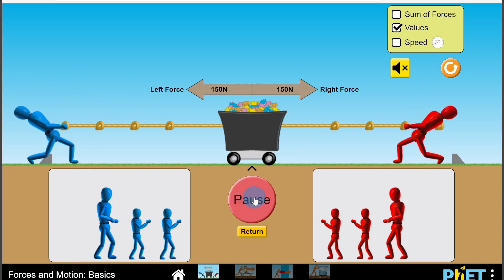And if we click go, you'll see that nothing's going to happen. The rope's not going to move either way because both are exerting the same force. So we have 150 newtons to the left and 150 newtons to the right in this case, and that means that the trolley in the middle is not going to move.